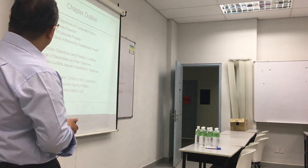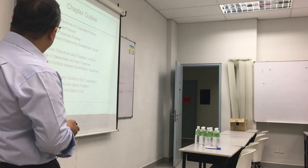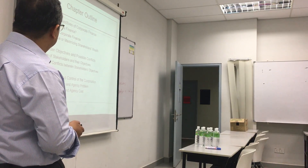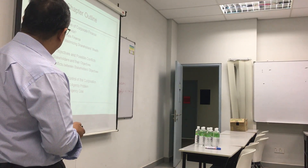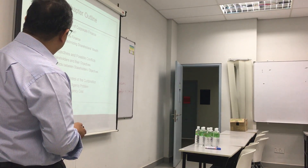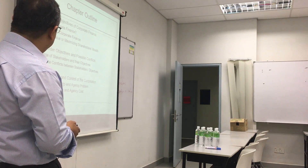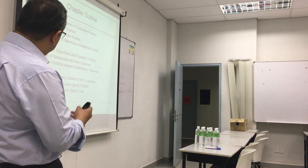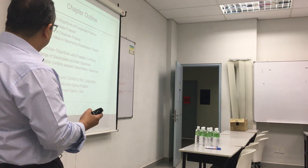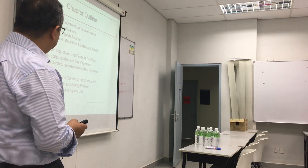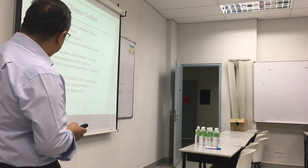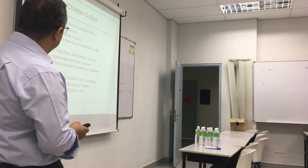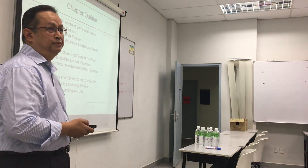We talk about what is corporate finance, its objectives, and why we need to maximise shareholders' wealth. Of course we also talk about the types of stakeholders — shareholders and stakeholders — and the conflicts of interest between shareholders and the company that leads to an agency problem.